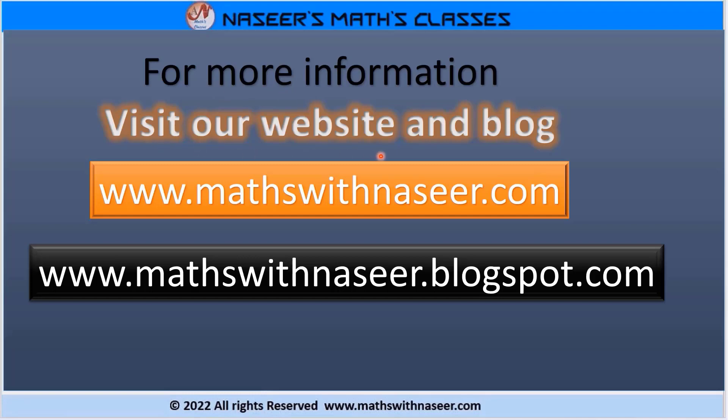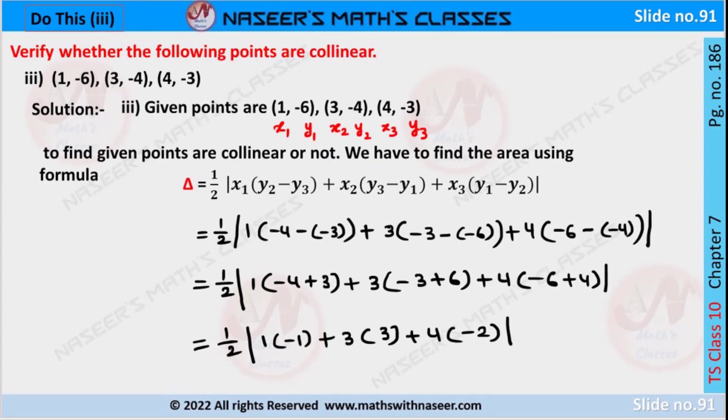For more information visit our website and blog www.mathswithnaseer.com and www.mathswithnaseerblogspot.com. Do these three, page number 186, chapter 7 coordinate geometry. The given ordered pairs are 1 comma minus 6,